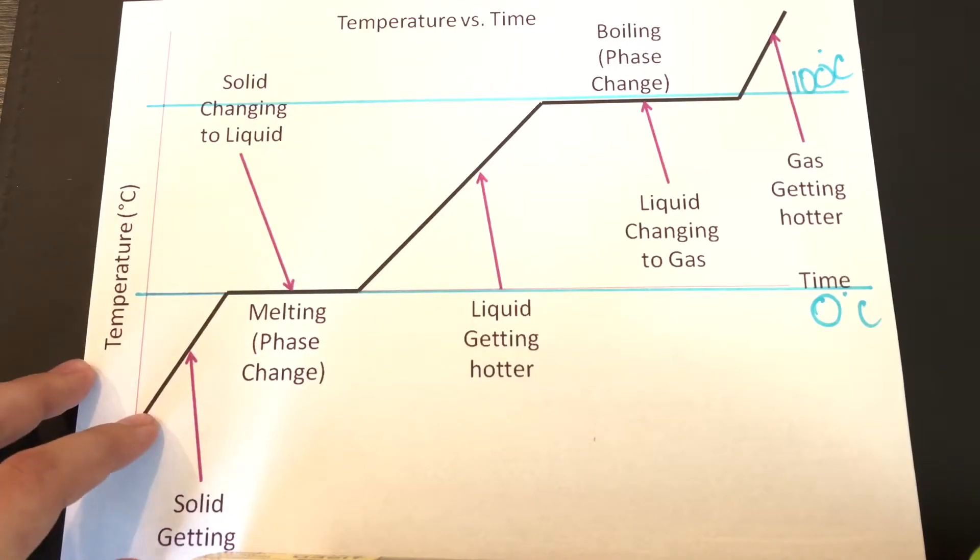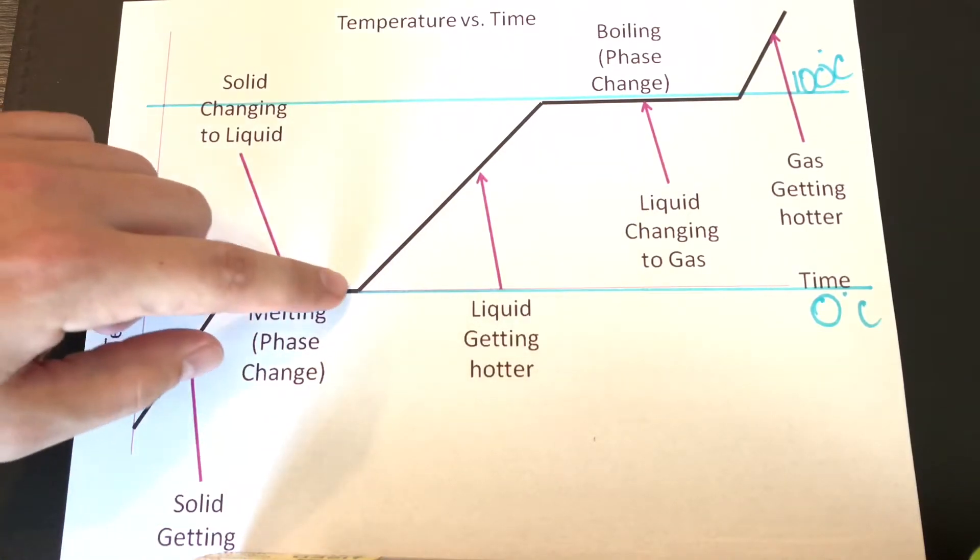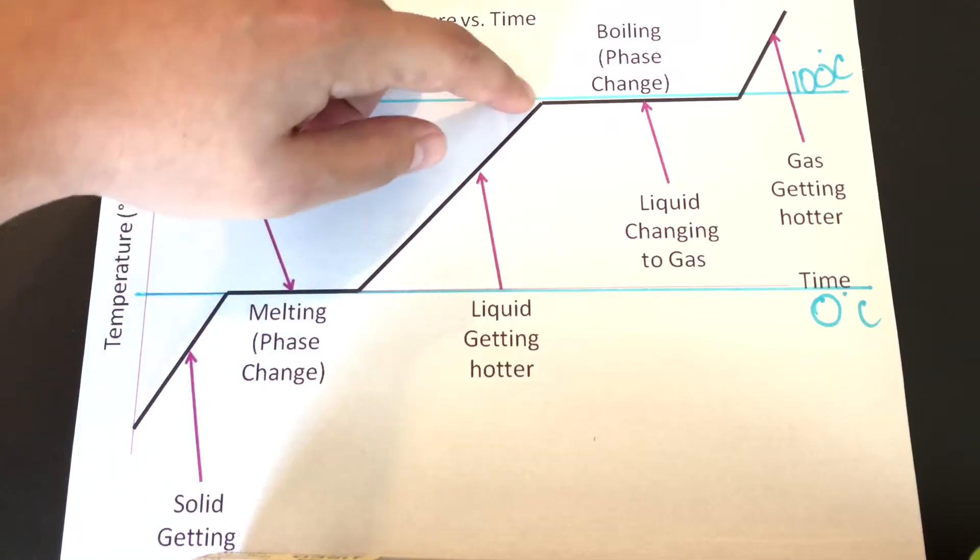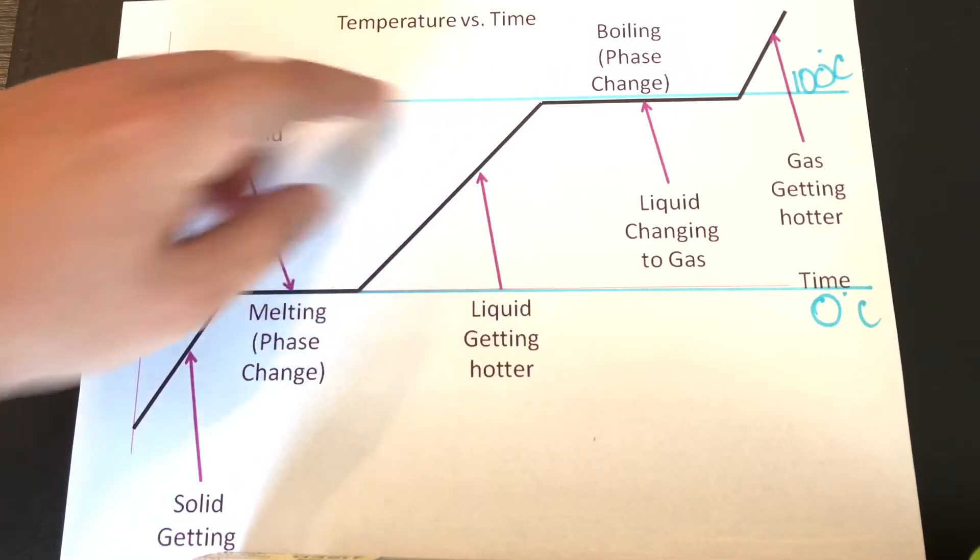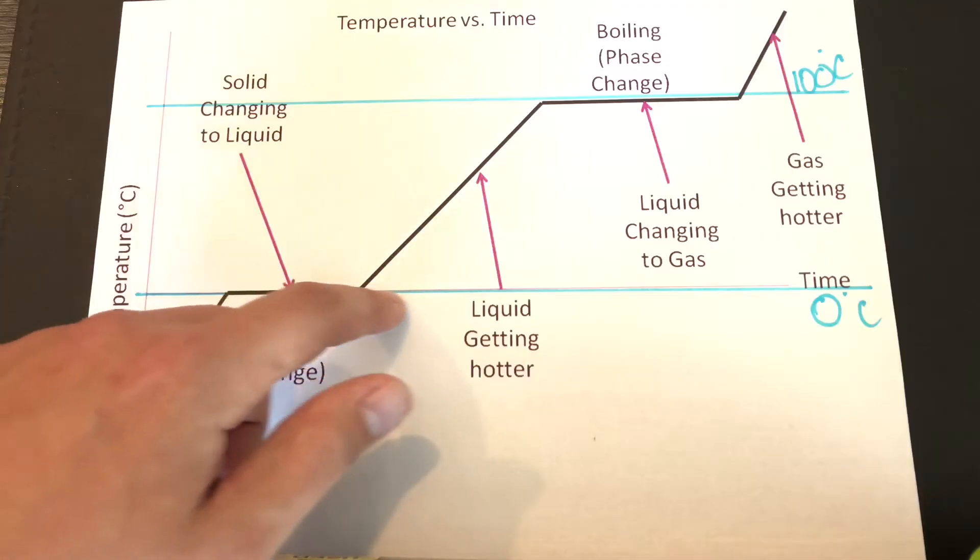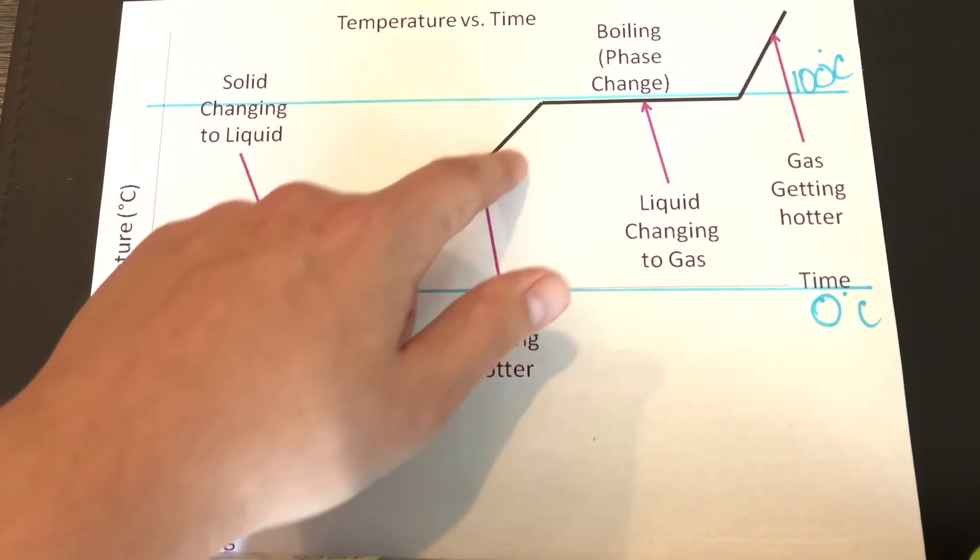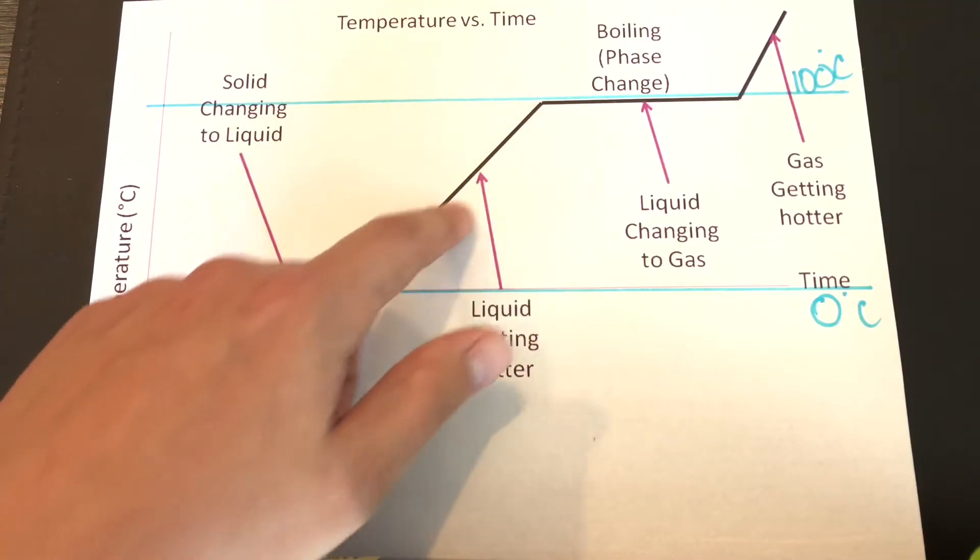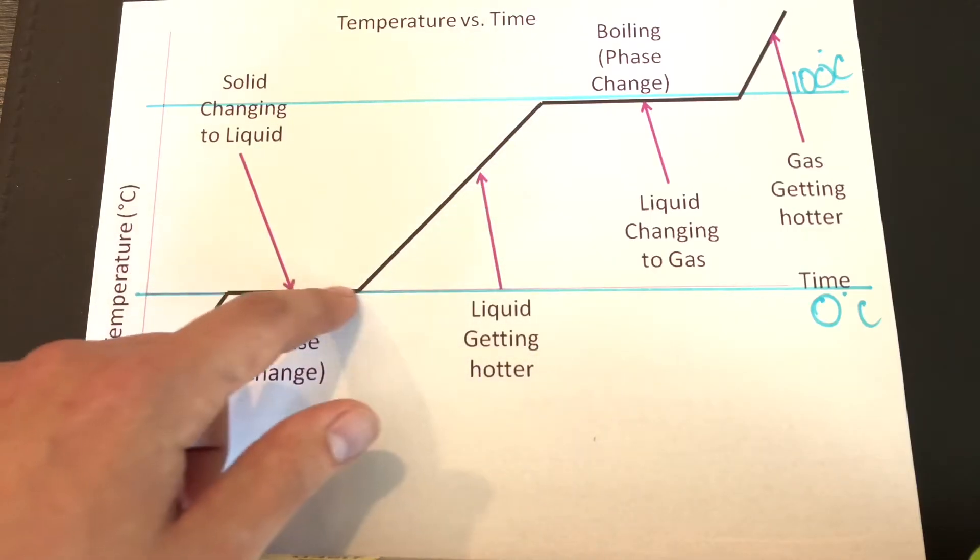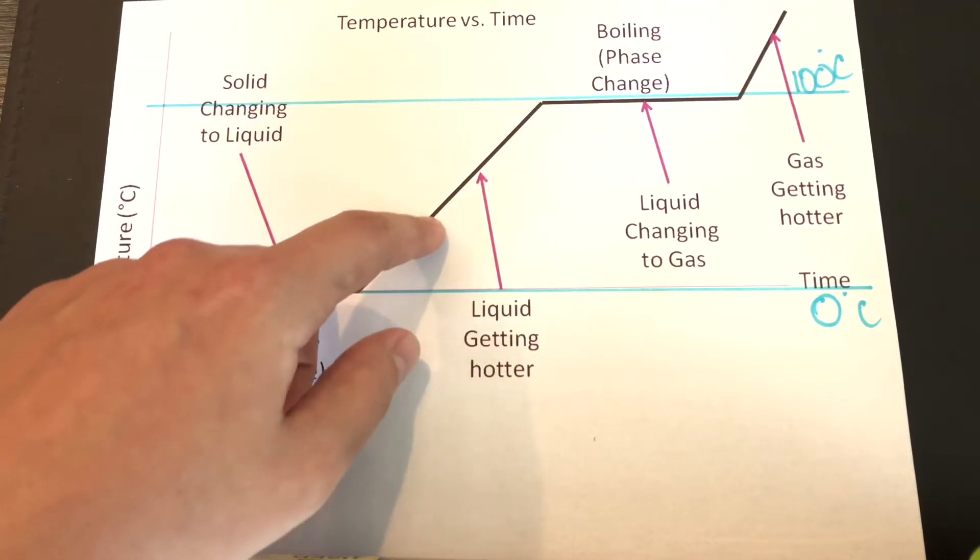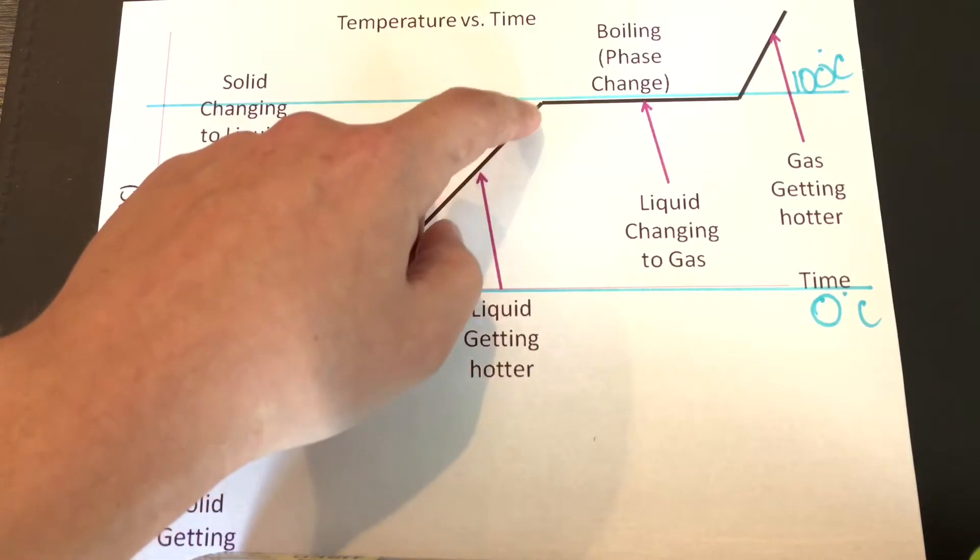Now notice on this plane right here it's increasing, so we are making a liquid here as it gets hotter. As the solid increases in temperature, the liquid is getting hotter until we finally reach our final phase in this case, which will be our boiling phase or vaporization phase.